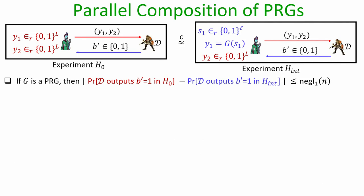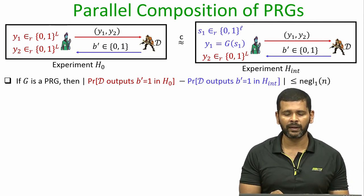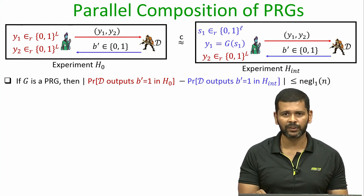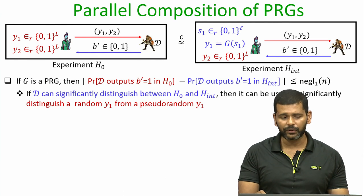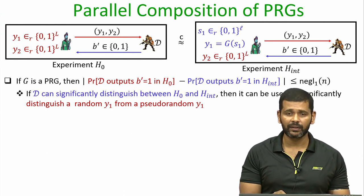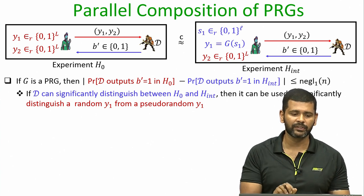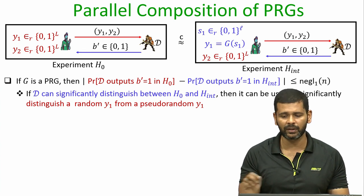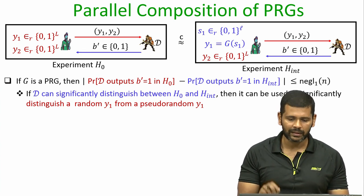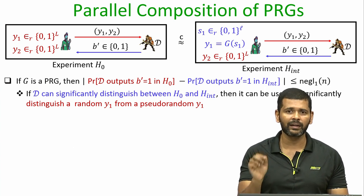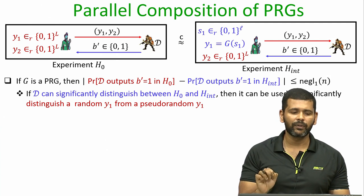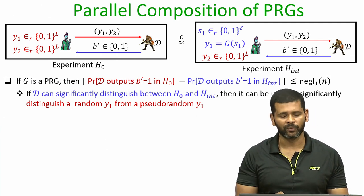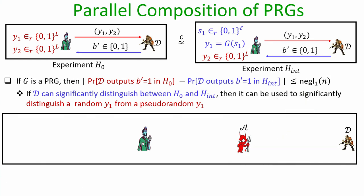Let us prove the first claim: if G is a secure PRG, no polynomial time distinguisher can distinguish H0 from H_int except with negligible success probability. The intuition is that if a polynomial time distinguisher can significantly distinguish H0 from H_int, we can use that distinguisher to design another polynomial time distinguisher A who can distinguish a uniformly random Y1 from a pseudo random Y1.